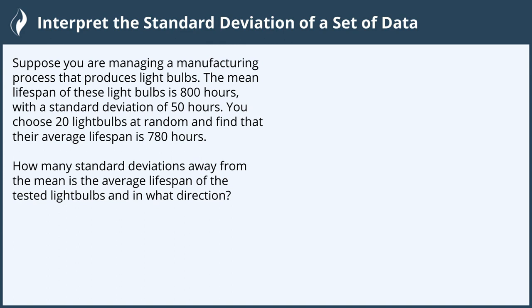Suppose you are managing a manufacturing process that produces light bulbs. The mean lifespan of these light bulbs is 800 hours, with a standard deviation of 50 hours. You choose 20 light bulbs at random and find that their average lifespan is 780 hours. How many standard deviations from the mean is the average lifespan of the tested light bulbs and in what direction?